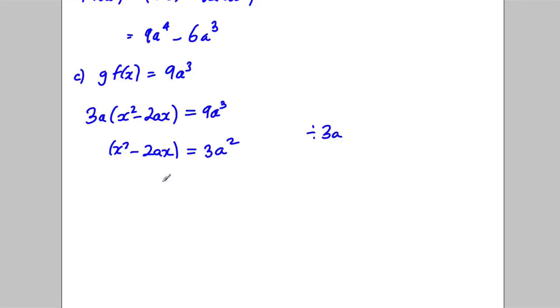And then what we're going to do is... We're trying to solve this in terms of a. Now, you could subtract the 3a² from both sides. So x² - 2ax - 3a² = 0 and attempt to factorise.